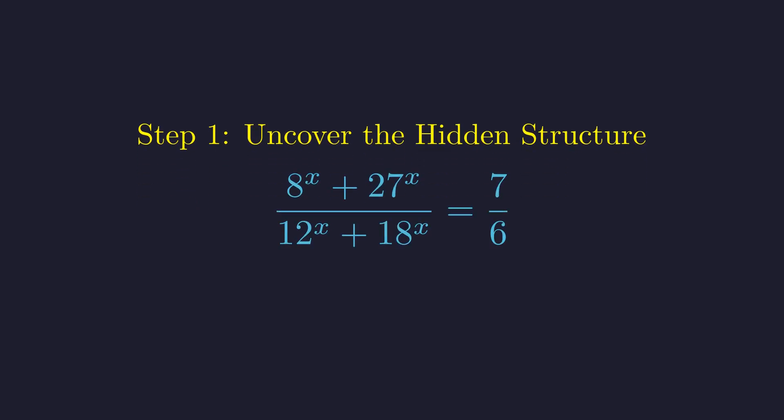8, 27, 12, and 18. What's the common thread here? They all break down into powers of just two prime numbers, 2 and 3.